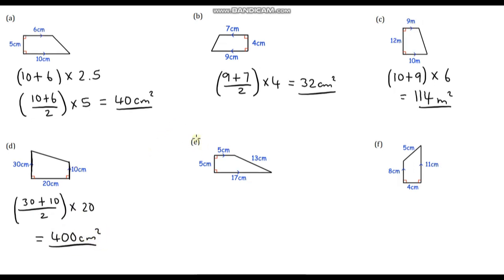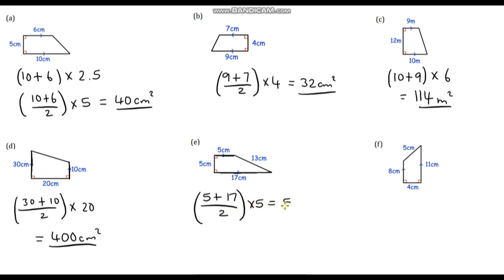Okay, question E. Our parallel sides are 5 and 17, so let's add those together: 5 plus 17. Then I'm going to divide by 2 and multiply by our perpendicular height which is 5. So 5 plus 17 is 22, 22 divided by 2 is 11, and 11 times 5 is 55 centimetres squared.